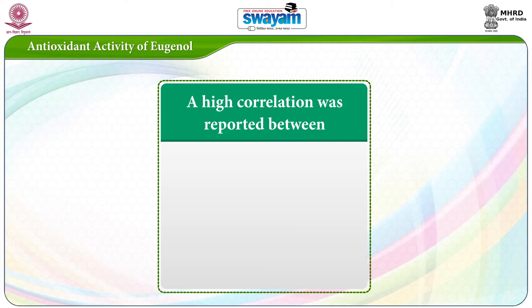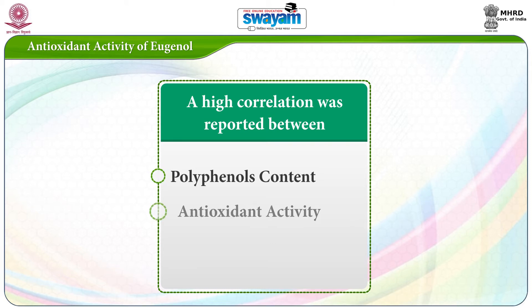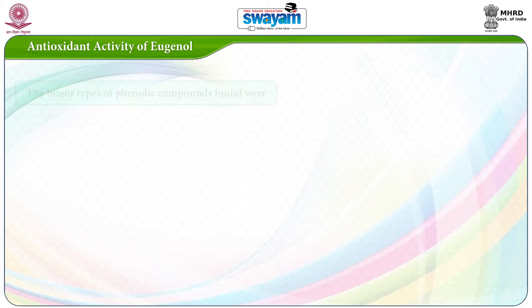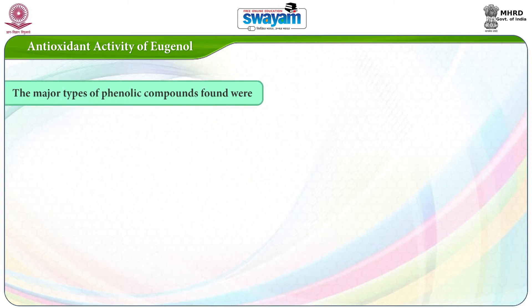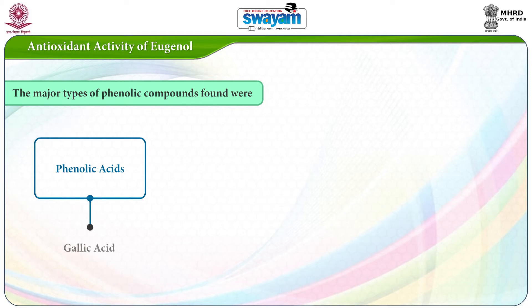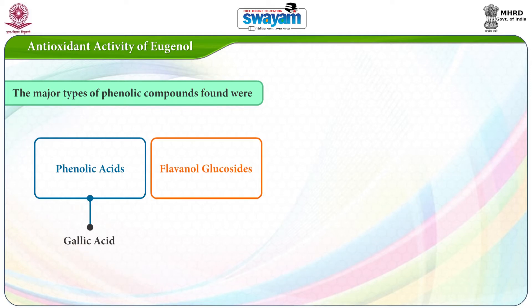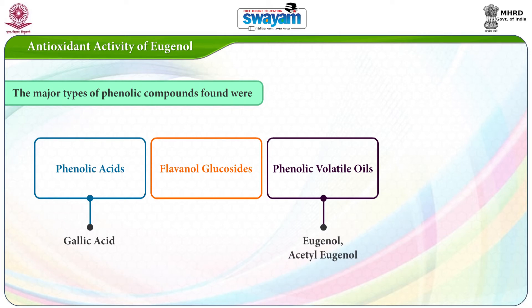A high correlation was reported between the polyphenol content and the antioxidant activity. Clove buds was the spice presenting the highest antioxidant activity and polyphenol content. The major types of phenolic compounds found were phenolic acids such as gallic acid, flavonol glucosides, phenolic volatile oils such as eugenol, and tannins.